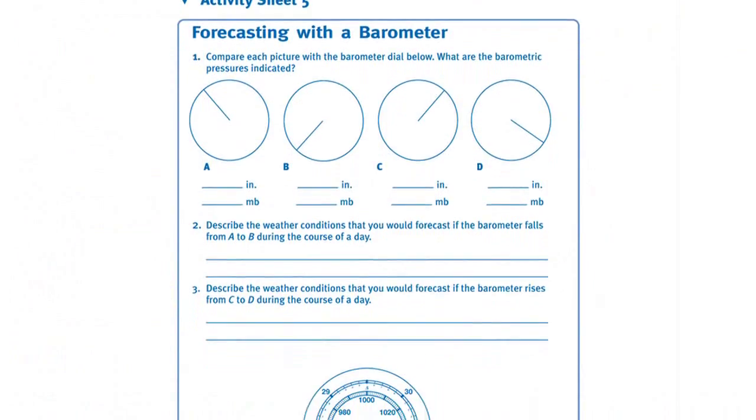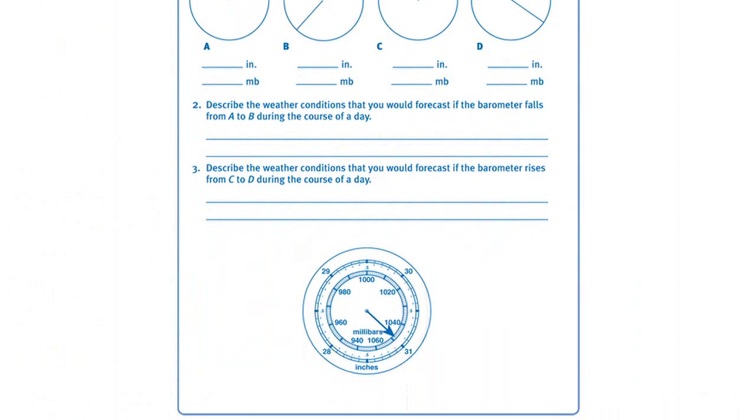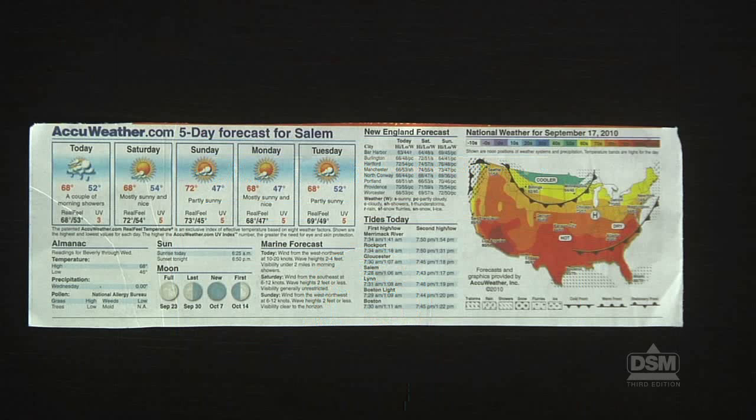To prepare for the activity, make a copy of Activity Sheet 5 for each student. Collect weather reports and obtain a current atmospheric pressure reading.